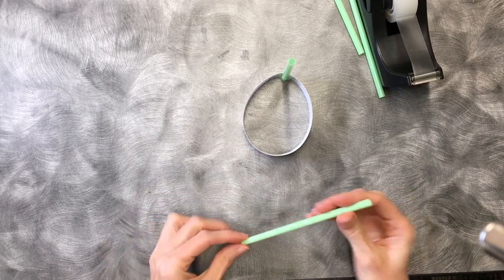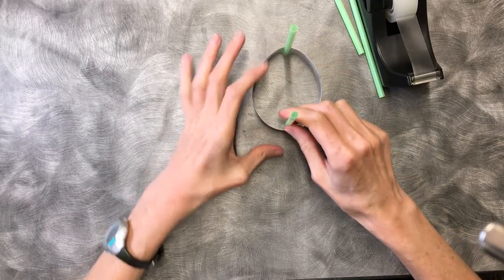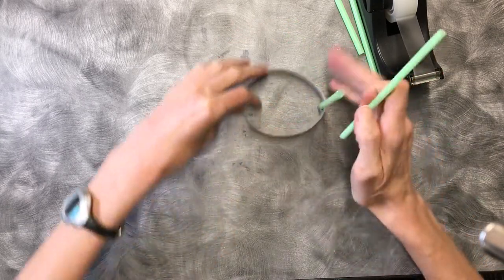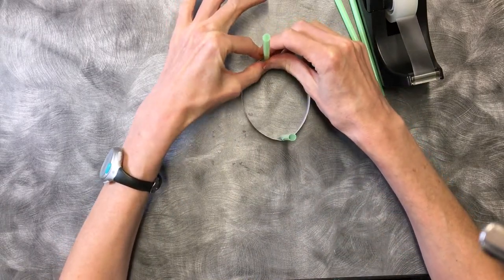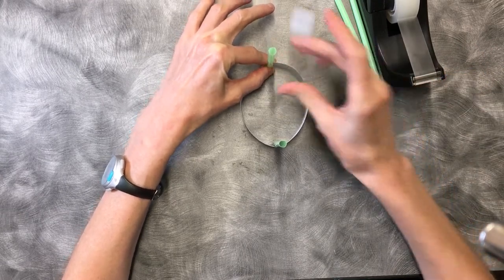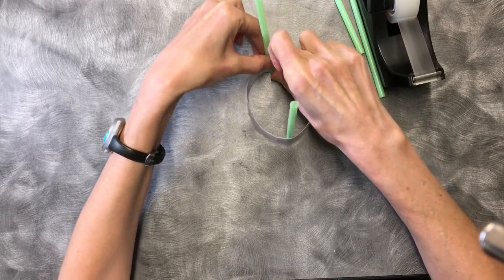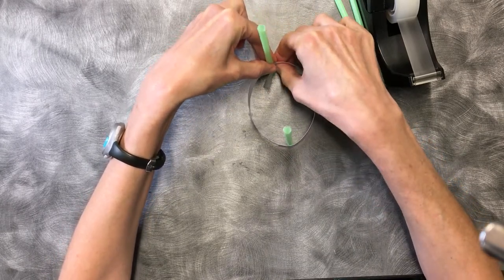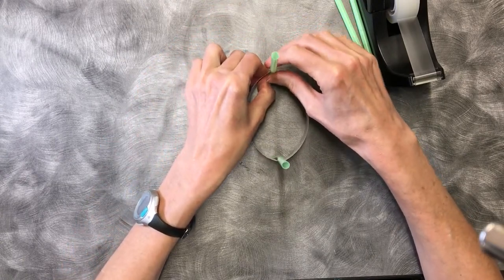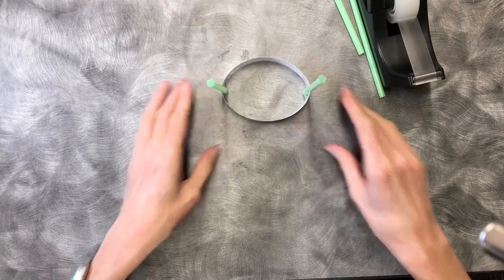Then we're going to grab our second straw and tape it also to the inside of the ring but we want to go directly across on the opposite side of the ring. I'm going to turn it around so it's easier for me to tape this. This is the easy part right here. You want them sticking straight up so if you have it going a little crooked you can adjust that.